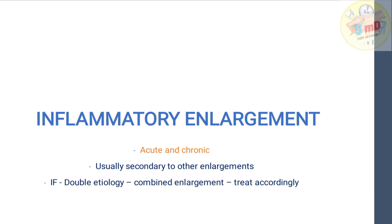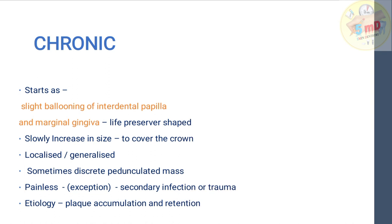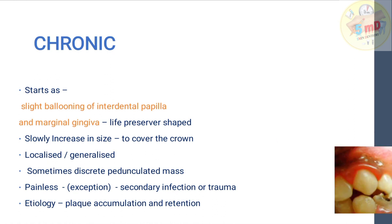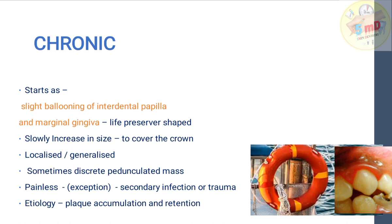If there is a double etiology — that is, along with inflammatory causes, there is another cause for the enlargement — it is called combined enlargement and should be treated accordingly. Chronic inflammatory gingival enlargement initially starts as slight ballooning of the interdental papilla and marginal gingiva. A life-preserver shape is seen from the interdental to the marginal gingiva in chronic inflammatory enlargement.